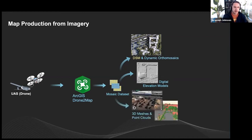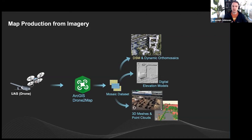Drone to Map can create 3D meshes and point clouds. Because it is a single engine living on your computer, it produces these data products in a fairly standard way — standard meshes, standard point clouds, and standard orthomosaics.